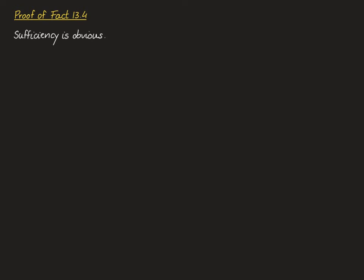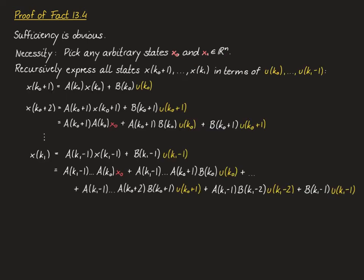For the proof of fact 13.4, we split the if-and-only-if statement into its two directions. Sufficiency is obvious: if the system is controllable on the discrete time interval, by definition we can drive it from any initial state x(k0) to any final state x(k1). Hence the reachable subspace — the set of states reachable from the origin — is equal to Rⁿ. To prove necessity, pick any arbitrary states x0 and x1 in Rⁿ.